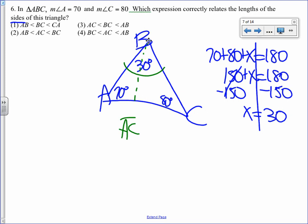The next smallest angle is 70, so the next smallest side is BC. And finally, the largest angle is 80, which makes the largest side AB. They're going from least to greatest: AC, BC, AB.